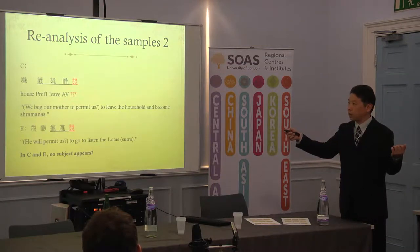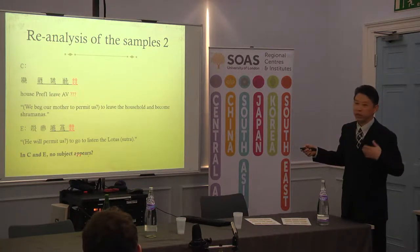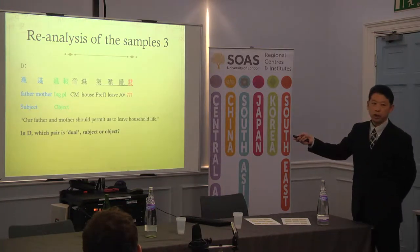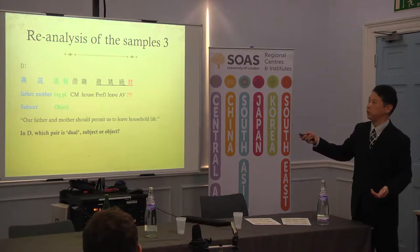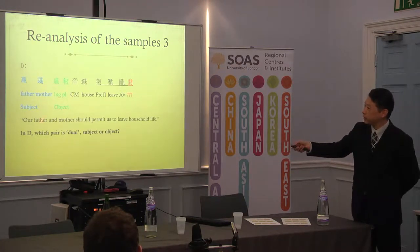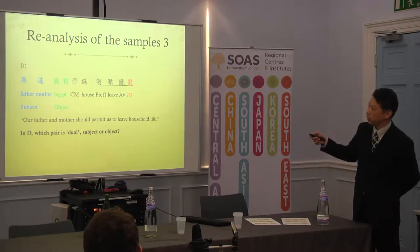Professor Nishida's sample has no agent in these sentences — no subject appears. Only in D can we observe probably the agent or object. This is the sentence: father, mother, first person singular and plural, case marker, house. This is the verb phrase.